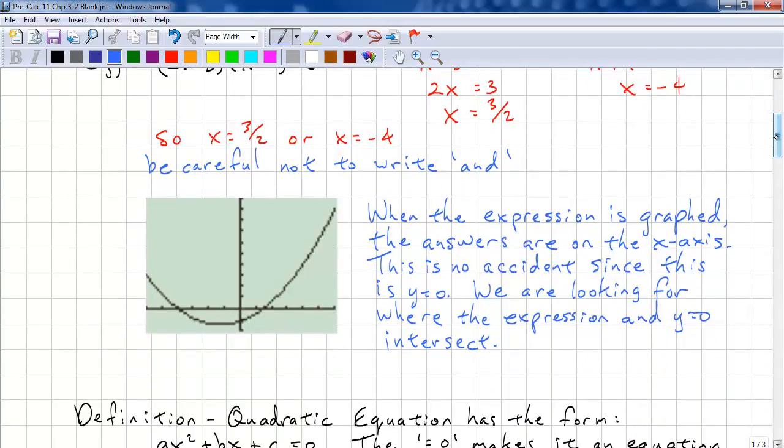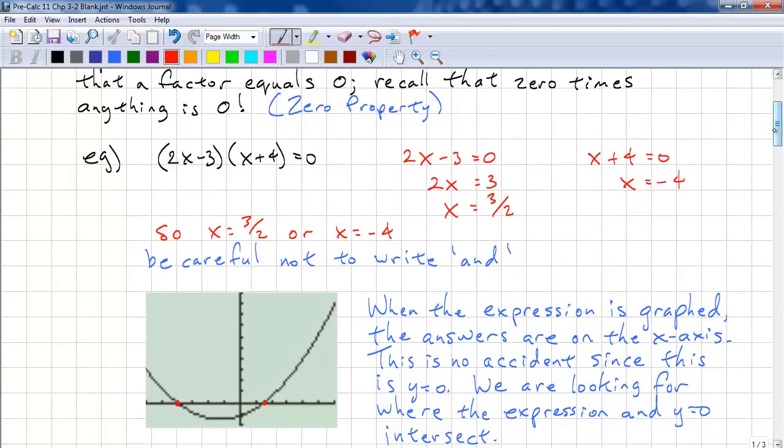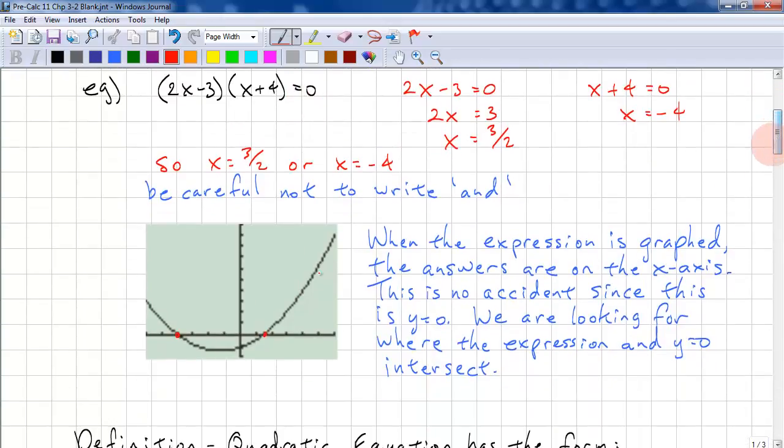When we graph this expression, the answers are here and here. That's three and a half, this is negative 4. And this is no accident, since this value is y is equal to zero. If we set this as y is equal to this, y is equal to zero, we're looking for where they intersect. And they intersect here and here.